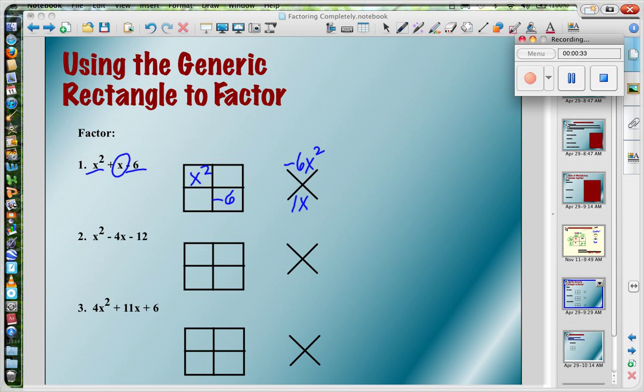So now I need two numbers who I can multiply to get negative 6 and add to get 1. And that is going to be 3 and negative 2. And they are both x's, just like my sum.